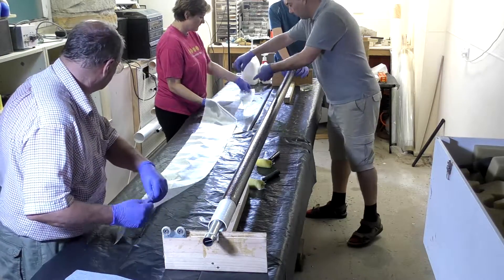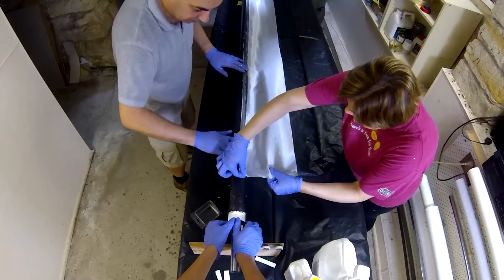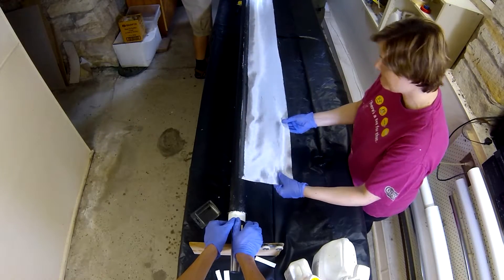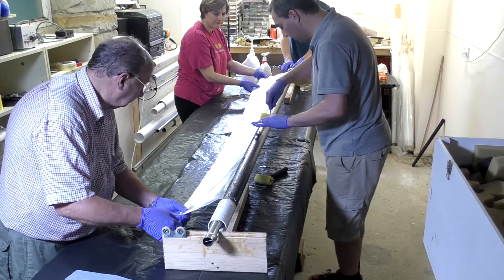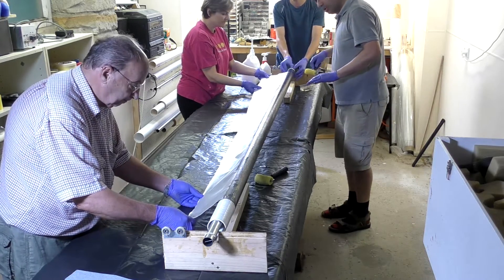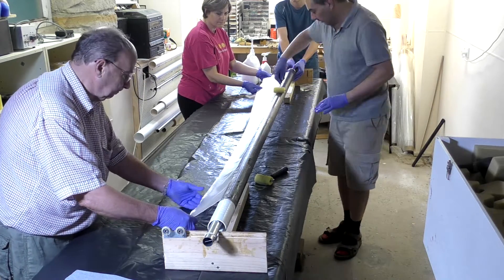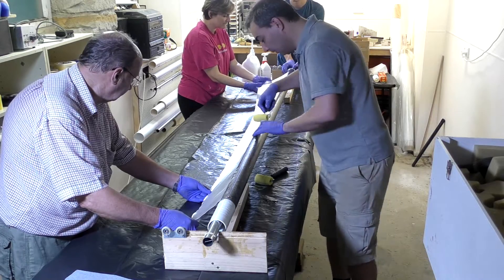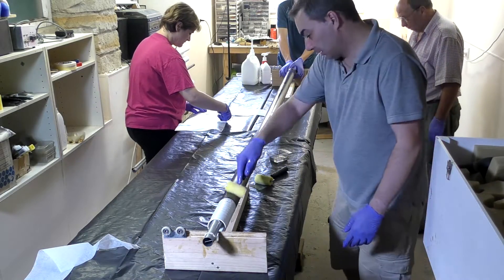Then we put on a single veil wrap of 85 GSM fiberglass that we cut earlier. This helps fill in the gaps in the sleeve and provides a smoother finish for the next layer. It also allows us to sand it without cutting through into the carbon fibers below.